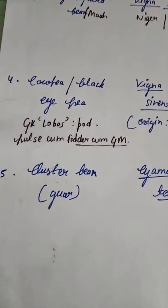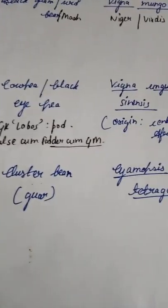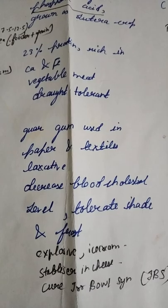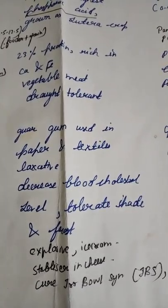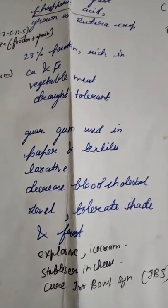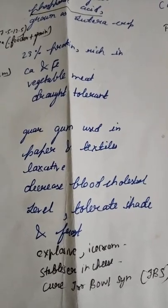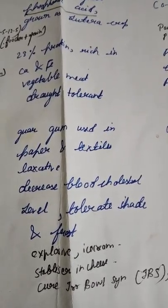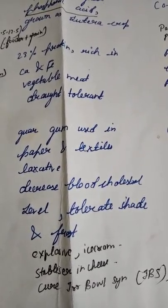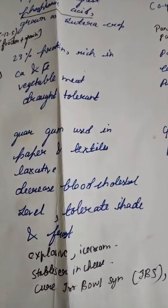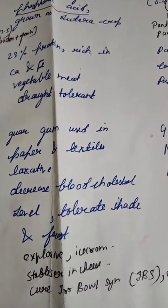Cluster bean is used for decreasing blood cholesterol level, in explosives, as a stabilizer in ice cream and cheese, and it cures irritable bowel syndrome (IBS). Please remember that cluster bean is used as an explosive, ice cream stabilizer, stabilizer in cheese, and cures IBS.